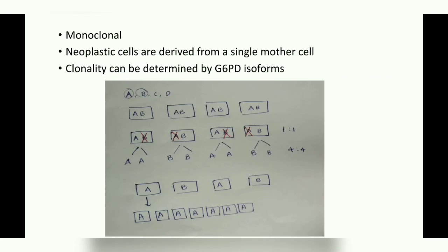All tumor cells are formed from a single progenitor or mother cell. Clonality can be determined by G6PD isoforms — there are many isoforms such as A, B, C, D, etc. Let's assume there are four cells of the uterus. In each cell, two variants of G6PD are inherited — one from the father and one from the mother — because G6PD is X-linked. However, due to inactivation of one X chromosome, only one variant can be expressed. So in this example, the first cell expresses isoform A, the second expresses B, the third expresses A, and the fourth expresses B.